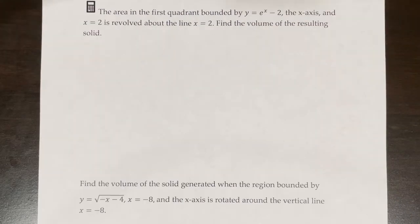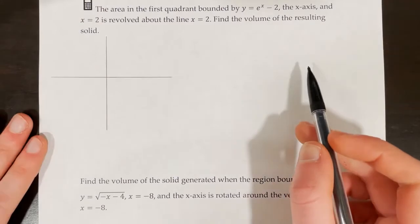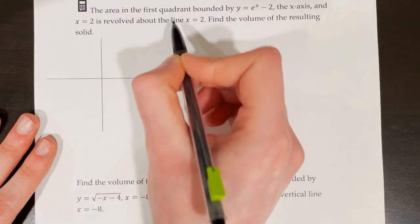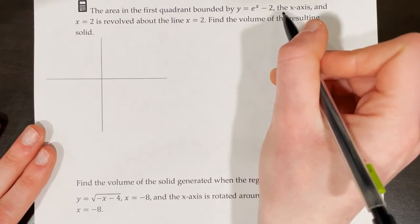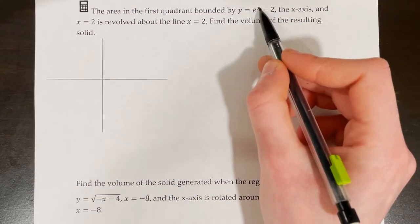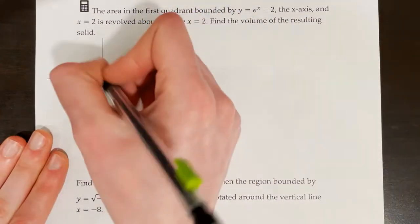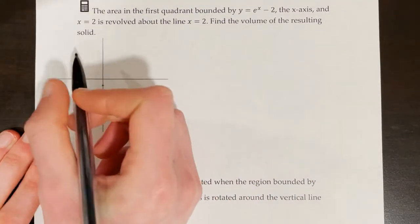Here's another graphing calculator problem. The area in the first quadrant bounded by y equals e to the x minus 2, the x-axis, and x equals 2 is revolved about the line x equals 2. Find the volume of the resulting solid. First, sketch all the functions. The curve y equals e to the x minus 2 is a standard e to the x shape shifted down 2, passing through the point (0, negative 1) since e to the 0 minus 2 equals negative 1.